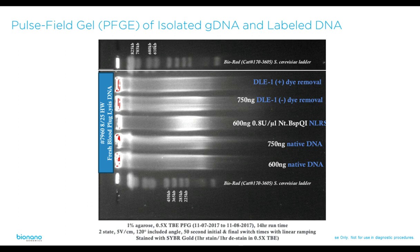Looking at a BioNano Prep sample run on a pulse field gel — which assesses size before hitting the labeling chemistry or instrument — the ladder goes to 825 KB. The bottom two rows show native DNA isolated via BioNano Prep methods, and there is DNA present in what we call the megabase compression zone. The top two rows are DLE1-labeled DNA samples going on the chip, and they also have megabase DNA at the compression zone — megabase DNA that can potentially be imaged on the SAFIRE.